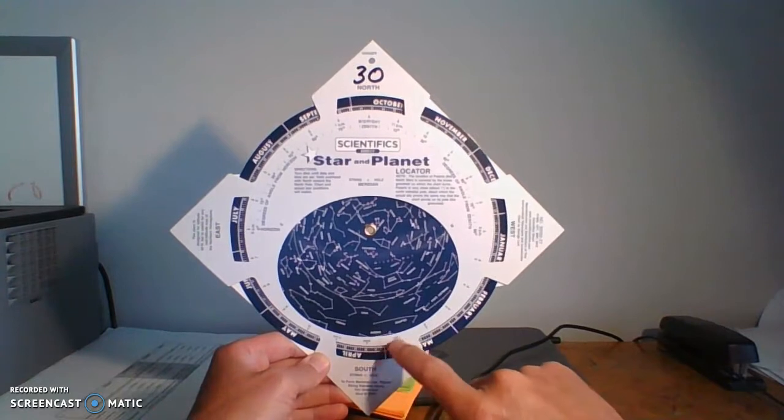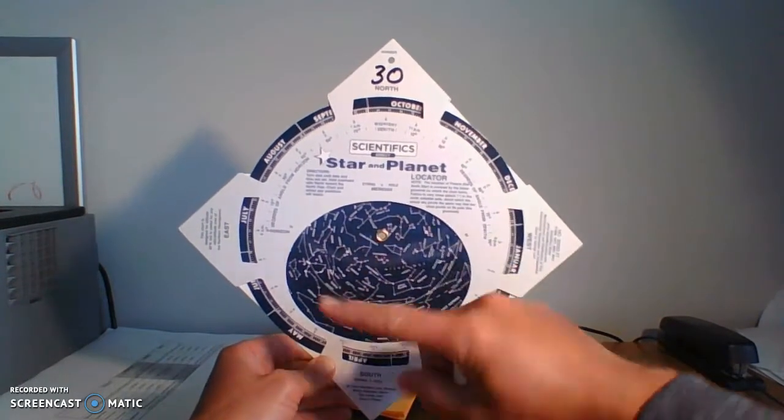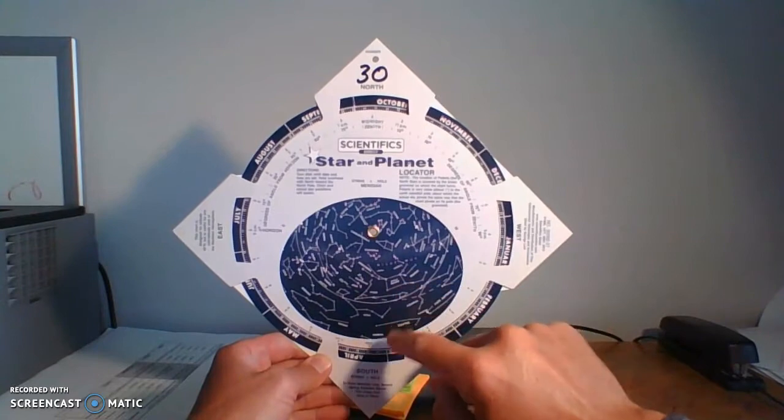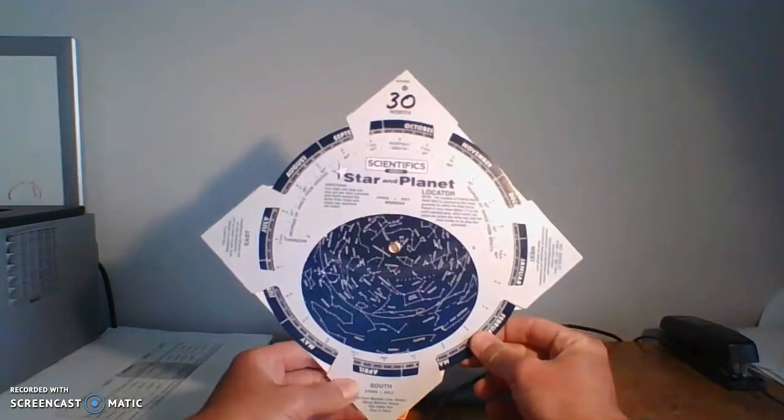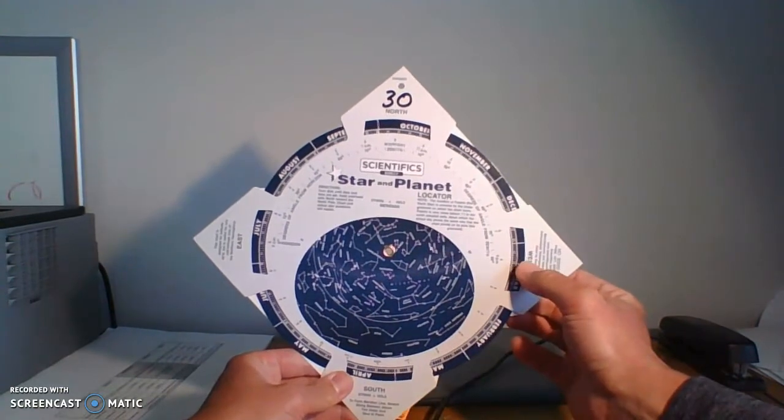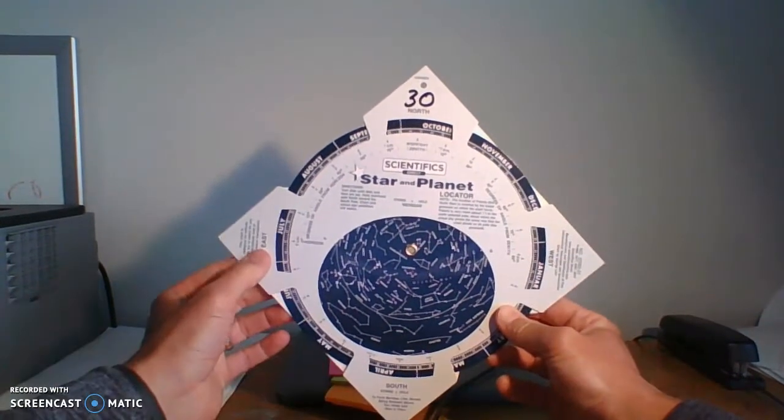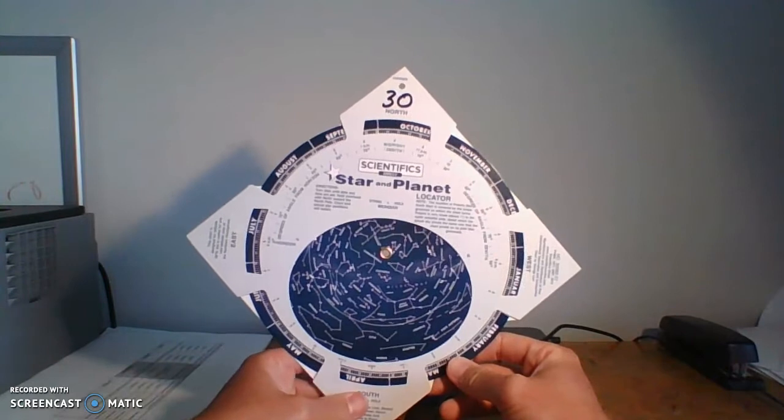But usually on a map, you've got east and west over there. And so now, because you're actually looking up, if you were to hold this up and look up like that, west is on this side, east is on this side. So that's why those are backwards.